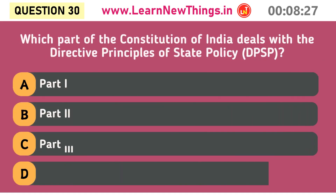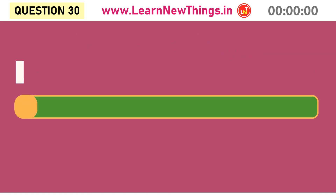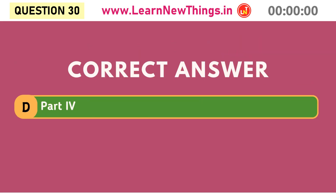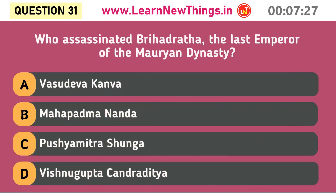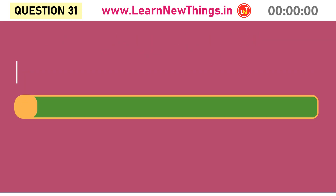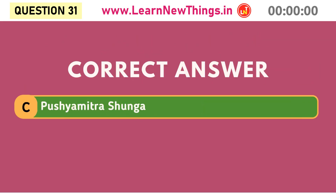Which part of the Constitution of India deals with the Directive Principles of State Policy? Part 4. Who assassinated Brihadratha, the last emperor of the Mauryan dynasty? Pushyamitra Shunga.